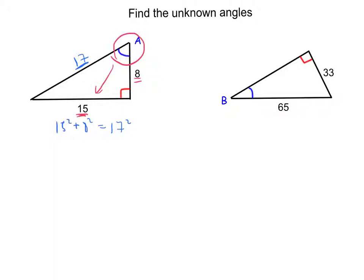So the angle opens up to the 15, that's the opposite, and the 8 there is adjacent. So opposite adjacent, this is a tangent ratio. The tangent of the angle A is 15 over 8, and now I know the ratio, so I want to go backwards to find the angle.